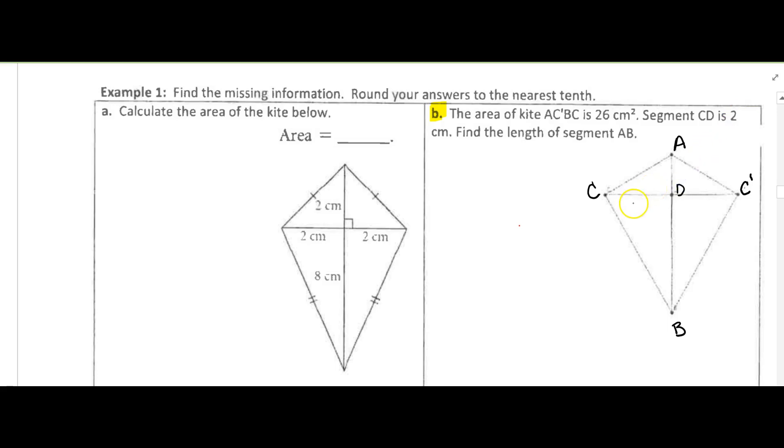If you remember from a kite, one of the diagonals is the perpendicular bisector of the other, so this also has to be 2 centimeters.